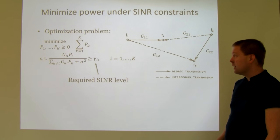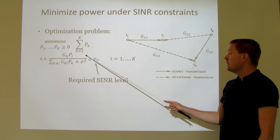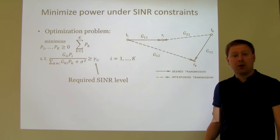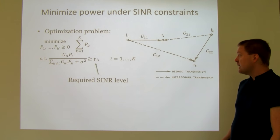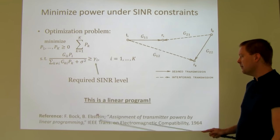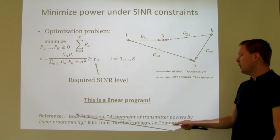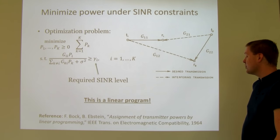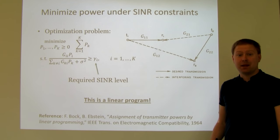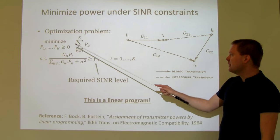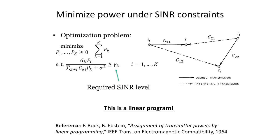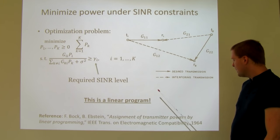This is a typical optimization problem: minimize the total transmit power subject to the SINR of each user from 1 to K being greater than or equal to a required level. Such problems appear in the literature for a long time — for example, a paper by Bock and Epstein called 'Assignment of transmit powers by linear programming' from Transactions on Electromagnetic Compatibility, 1964. They showed that by rearranging terms — moving the denominator to the other side — everything becomes a linear program, one of the easiest types of optimization problems to solve.